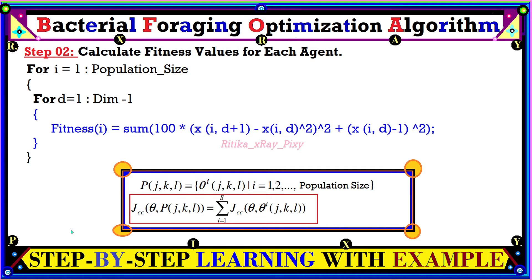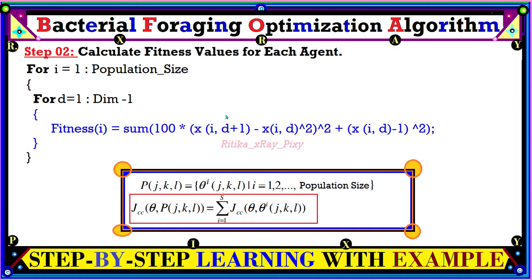After initializing the population, we will calculate the fitness values for each agent in the grand population. In step 2, we are going to calculate the fitness values using a specific function. This function represents the cell-to-cell signaling of the E. coli bacteria, and we use it to calculate the fitness values for each individual in the grand population.